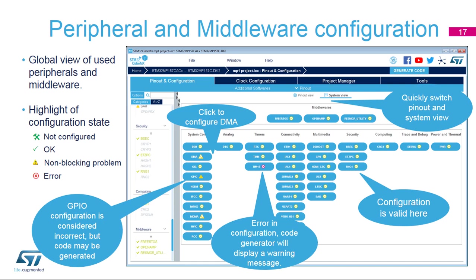Each button with access to configuration options is displayed with a small icon indicating the configuration state. The default state is not configured. Clicking on a button for a peripheral or middleware displays its configuration options. Even when configured correctly, further modifications are possible. Warning signs provide notifications about incorrect configurations, and the peripheral will not work if code is generated in this state. Critical errors are represented by a red X, and the configuration must be modified to continue. To add more peripherals and components, return to the Pinout tab.